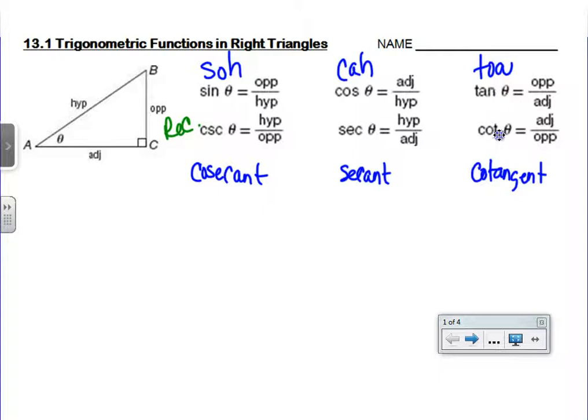Sine is opposite over hypotenuse, but cosecant is its reciprocal. So we're going to continue that. Cosine's reciprocal is secant, and tangent's reciprocal is cotangent. But there's a reason in trig why they are paired up the way they are. It wasn't just willy-nilly assignment of who was who.